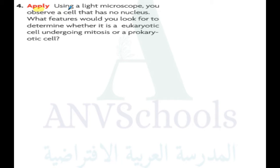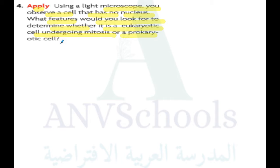Number four, apply. Using a light microscope, you observe a cell that has no nucleus. What features would you look for to determine whether it's a eukaryotic cell undergoing mitosis or a prokaryotic cell? What features will you look at?